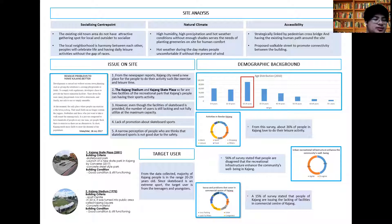Issue on site: based on the Malay Mail newspaper from 18 July 2017, Kajang City needs a new place for people to do activities like exercise and leisure time. The Kajang Stadium and Kajang Skate Plaza are the two recreational facilities that Kajang's people have for sports activity. However, even though skateboard facilities are provided, the number of users is still lacking and not fully utilized at maximum capacity.